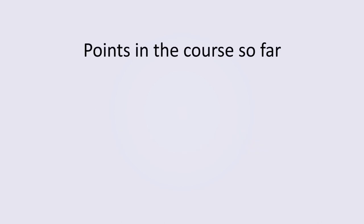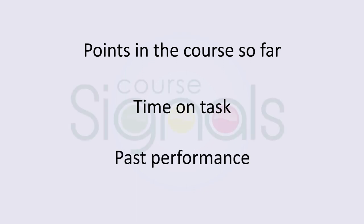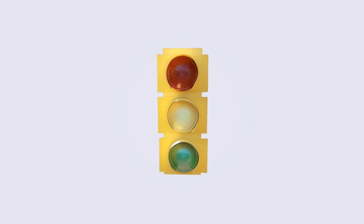You might want to use points in the course so far or time on task. You might look at how you performed in the past. Course Signals looks at these three factors and gives you a light, a prediction of how likely you are to succeed in the course.